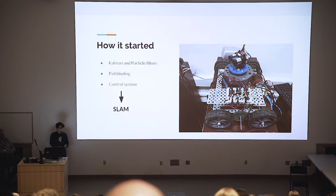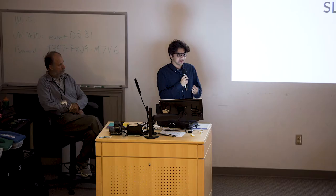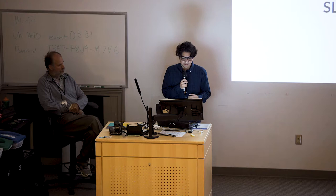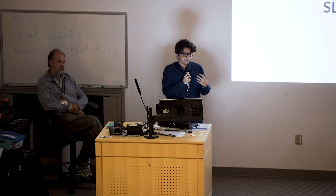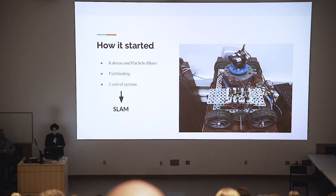The next step is to have algorithms that can pathfind throughout the environment. That takes the position of the car, the environment it's in, and then you tell the program where you want the car to go and it plots a course to that location — using algorithms like Dijkstra's algorithm, A*, or Theta*. For a control system, you need to be able to turn the car, tell it how fast to go and when to brake, using something like a PID controller to actually manipulate the car.